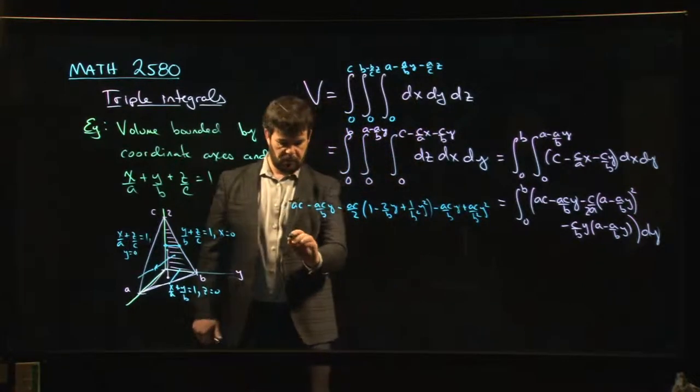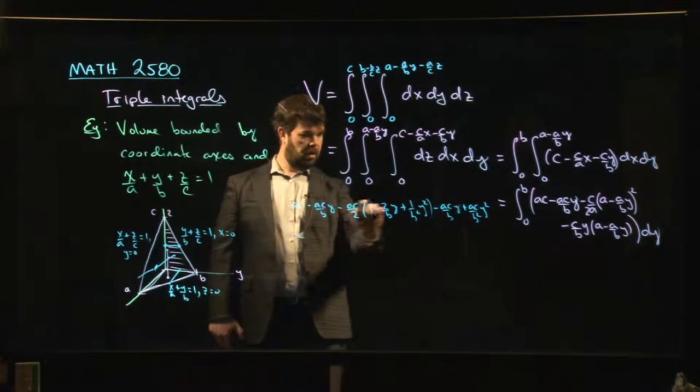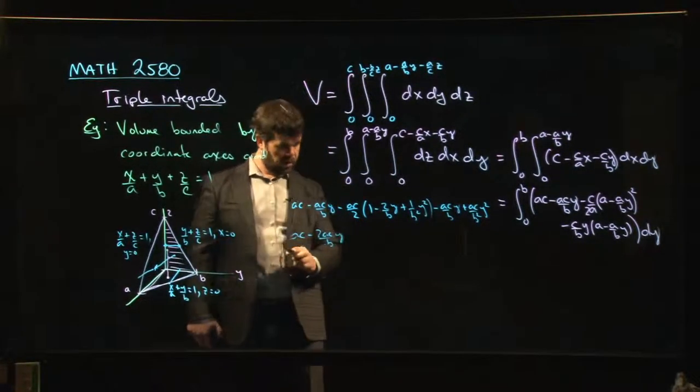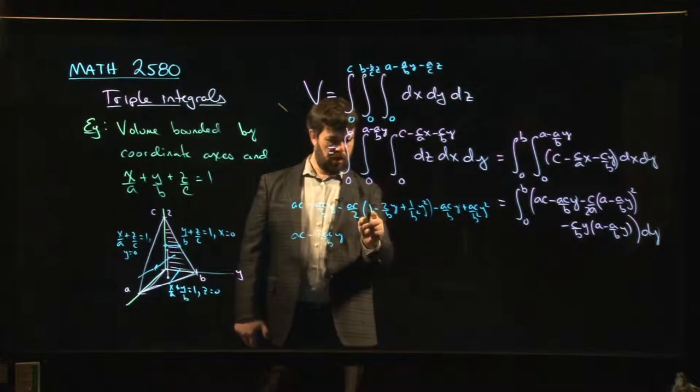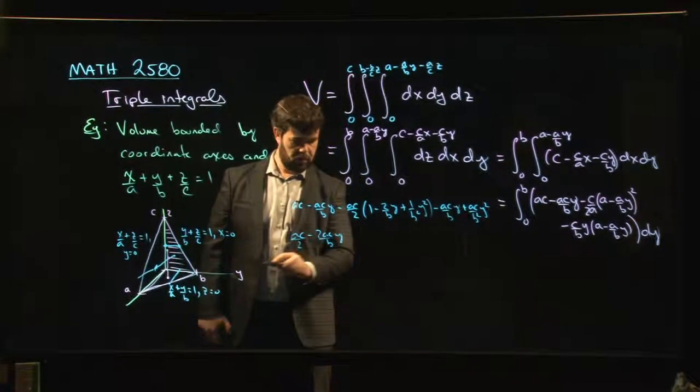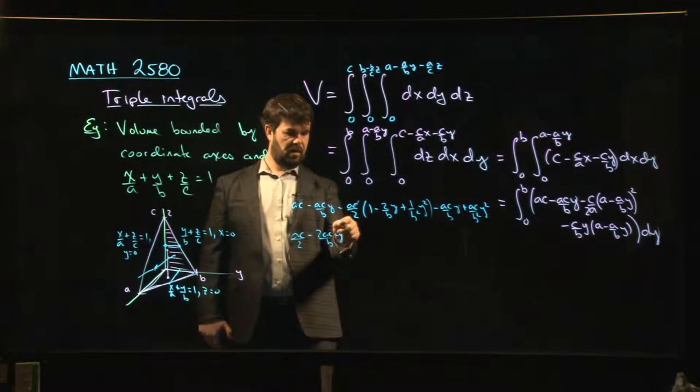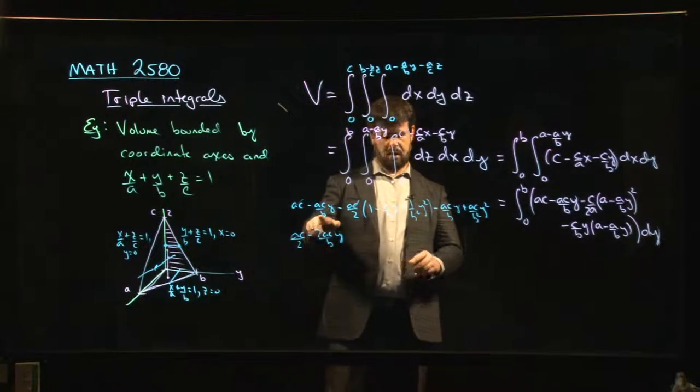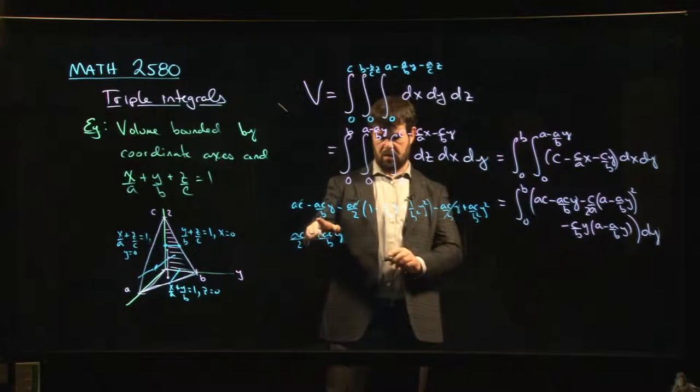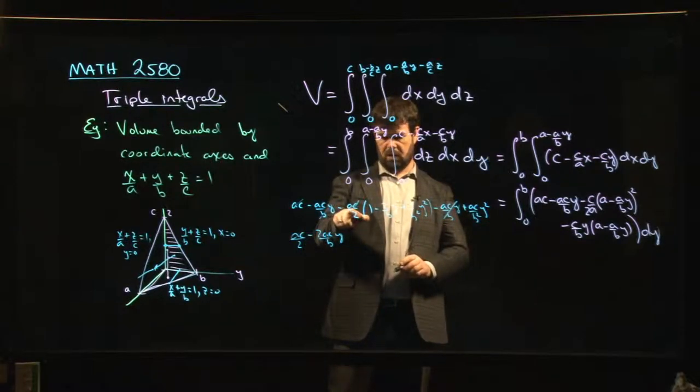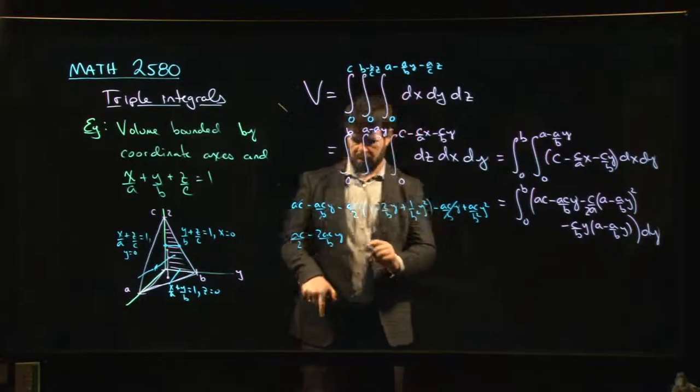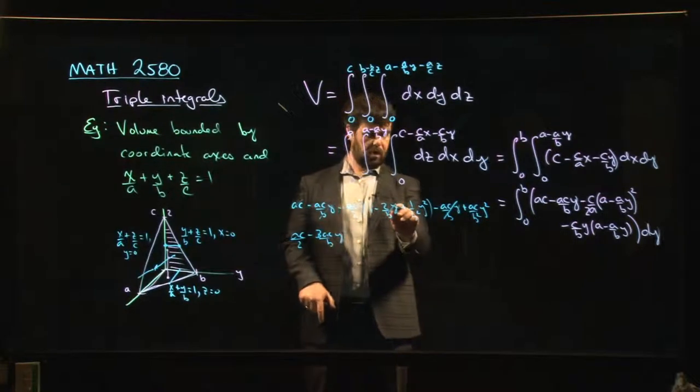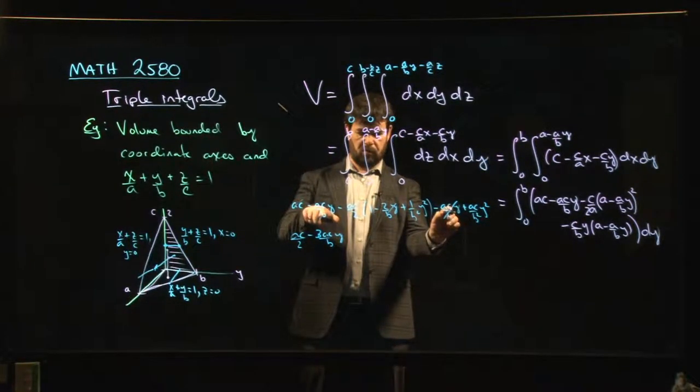So if I clean all this up, I've got ac, I've got -(2ac/b)y. I've got, oh, minus a half ac from here. So I've taken care of that and that and that. Oh, but then I also have, wait, there's one more here. (ac/b)y. Okay. There's actually three of them. (ac/b)y, (ac/b)y, (ac/b)y. Oh wait, wait. Minus, minus. Never mind.